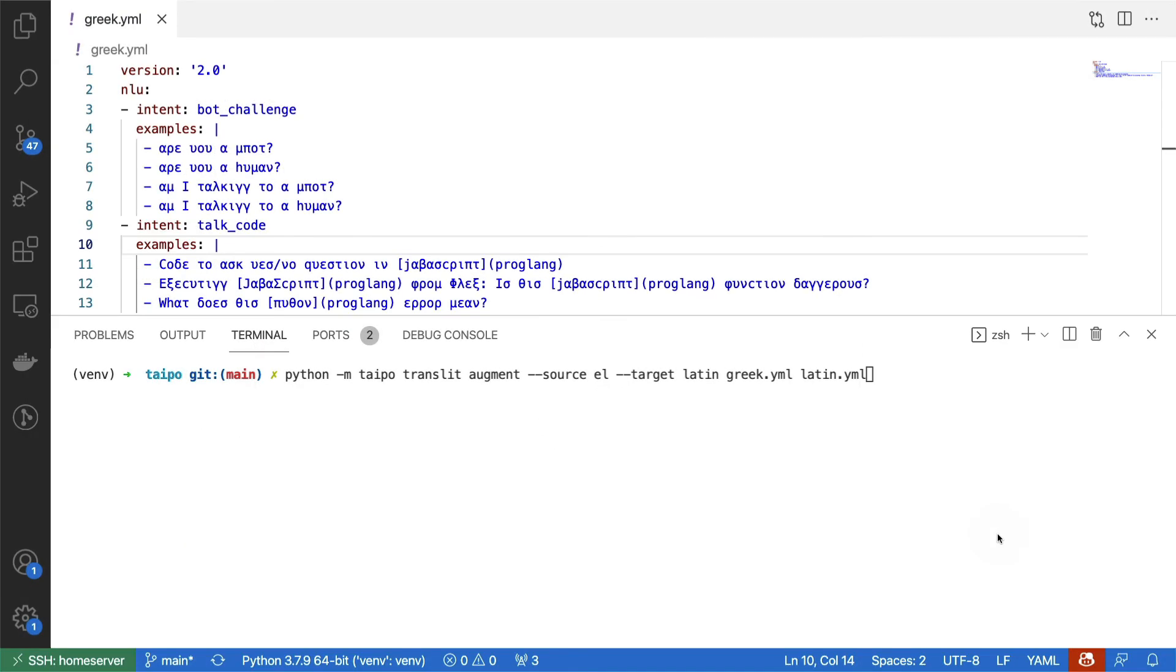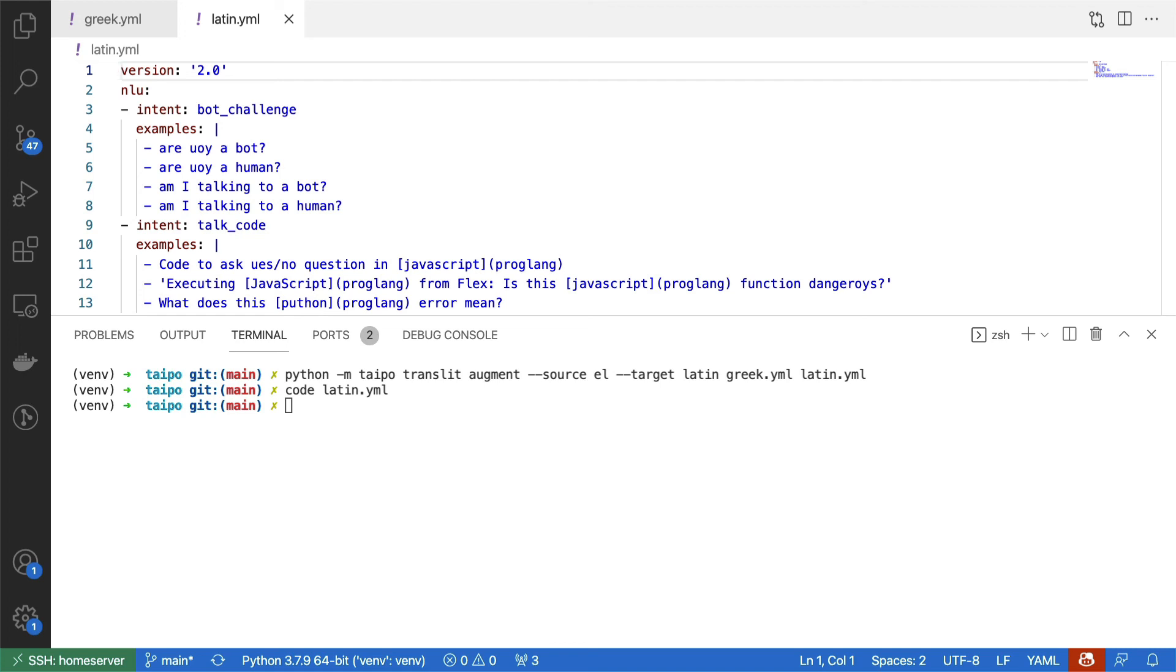So just to give a really quick demo of this approach, I have a file here called greek.yaml that contains some Greek examples that I want to use in my virtual assistant. Then the typo command line app has a transliteration module. And inside of that, there's an augment command that can change one file into another one. I'm saying that the source language is Greek. I'm telling it that the target language is Latin, and I'm telling it to generate this latin.yaml file from this Greek file. And when I run this, it will generate a new file called latin.yaml. And if I open that up, you can see what's been generated.